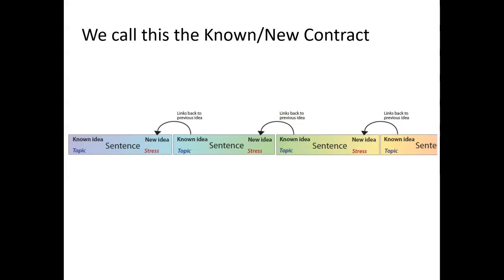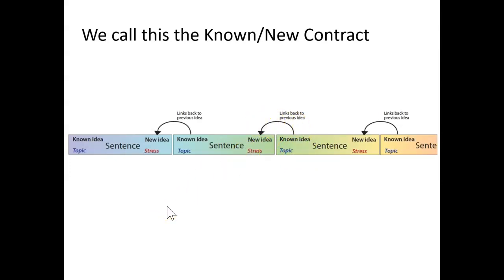The stress is always introducing new information and the topic links back. We call this the known new contract. In an ideal formulation — and there are lots of variations — each sentence begins with something we already know, then shifts to a new idea that gets repeated at the beginning of the next sentence, linking back and providing reinforcement. Then we go to another new idea and the next sentence links back. The more complex and technical your subject matter is, the more important it is to do these reinforcements.